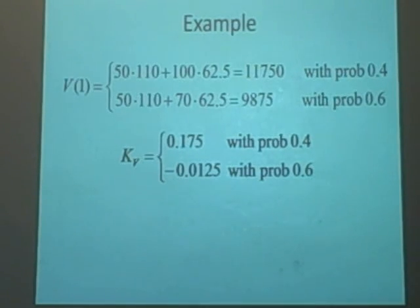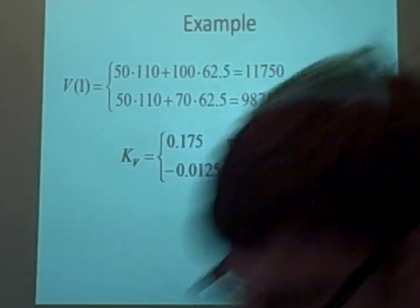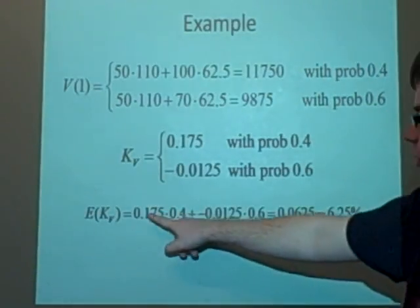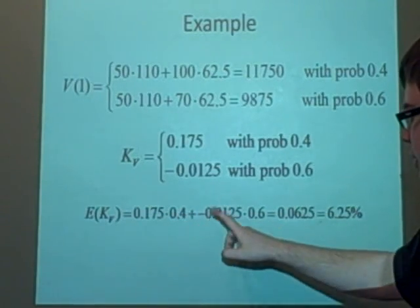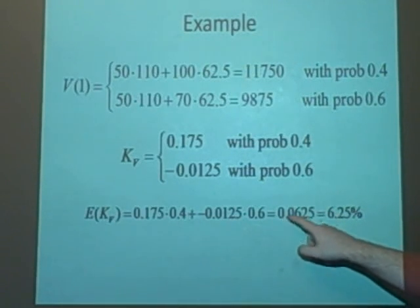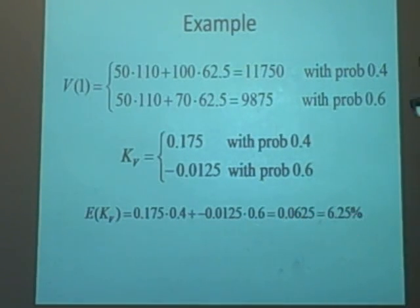Now what we can do is we can put this in our formula for the expected return, so expected of KV, which is the upper times probability times the lower times that probability. So that's nice and easy, which gives us 0.0625, which is 6.25%. So you're expected to make a profit of 6.25%.